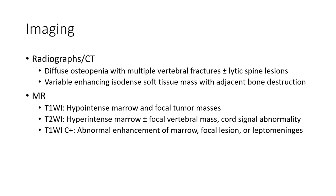Imaging: radiography and CT findings include osteopenia, multi-focal lesions, plus or minus thick spinal lesions, lytic bone lesions, isodense soft tissue masses with adjacent bone destruction in AML. MRI findings: T1WI shows hypointense marrow and focal tumor masses. T2WI shows hyperintense marrow plus or minus focal reticular mass-like signal abnormality.